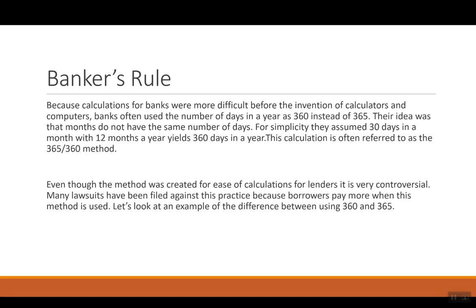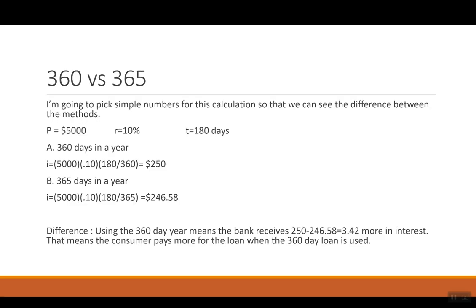We're going to look at an example so you can see the difference between using 360 and 365. I'm just going to pick some simple numbers for this calculation. So my simple P is $5,000, R is 10%, and then 180 days. Method A, I said let's use 360 days in a year. So to figure out the interest, I have 5,000, I have my 10%, and then I have 180 over 360. So this way, if we were having to pay interest on a loan, the $5,000 at 10% for 180 days means we will pay $250 to the bank.